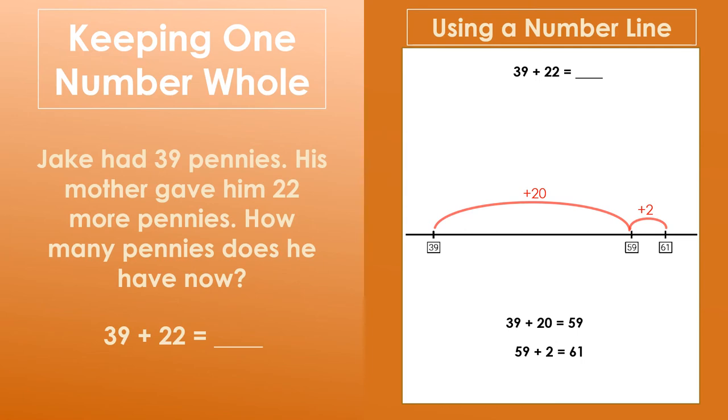So, all together, we added on 22 to 39. Jake has 61 pennies now.